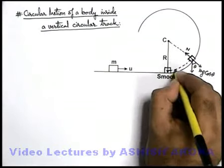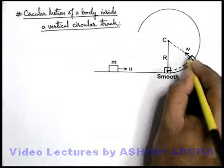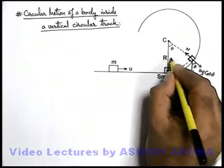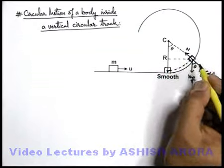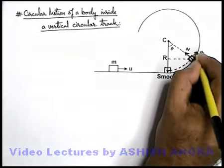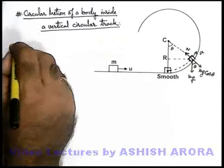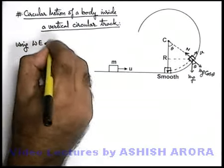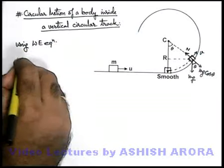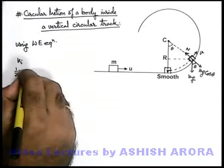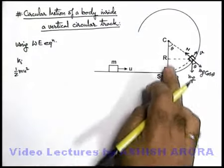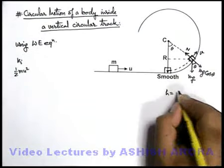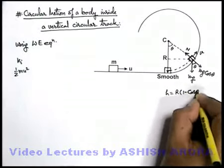As the block reaches up by an angle θ, if the angular displacement is θ, we can directly write the speed of this block using the work-energy equation. Say it is moving with speed v. The initial kinetic energy of the block was half m u squared. As it is raised up by a distance h, where h can be written as r(1 − cosθ).